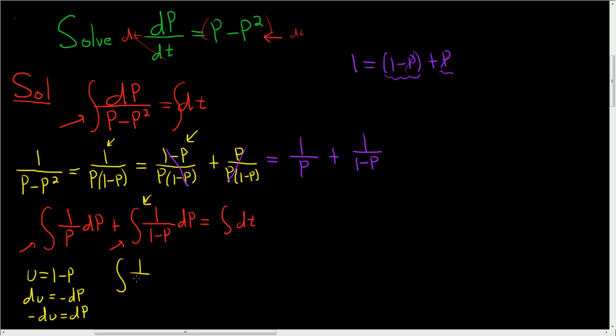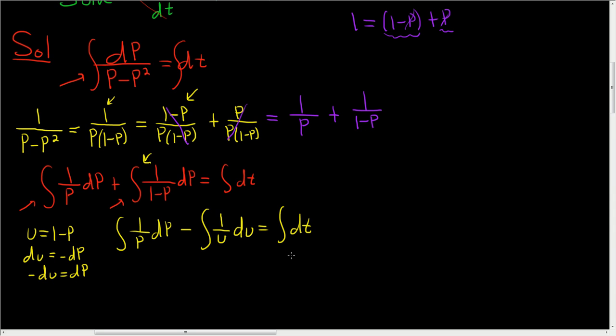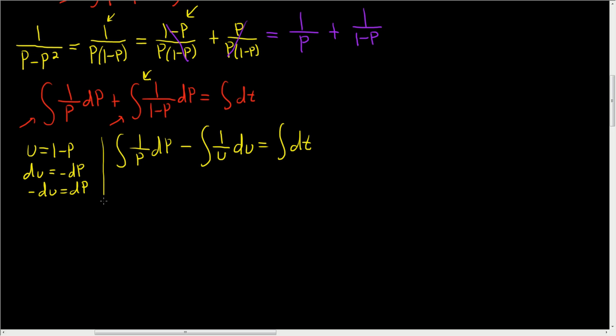So rewriting this, we have 1 over p dp minus the integral of 1 over u du equals the integral of dt. Let's go ahead and integrate this. We could have done it a while ago. I was just trying to show some steps.